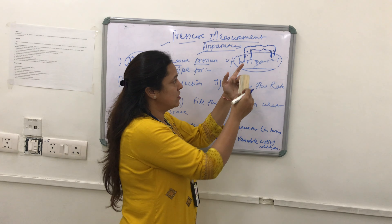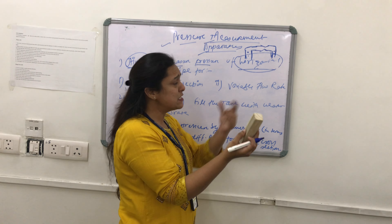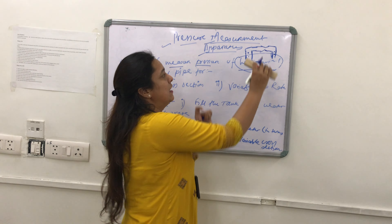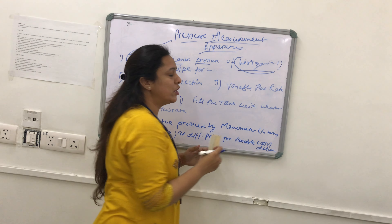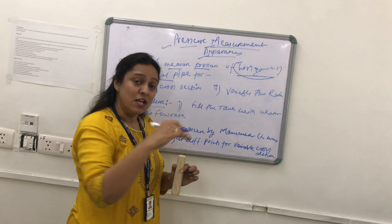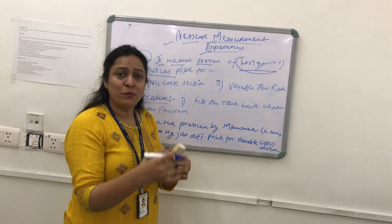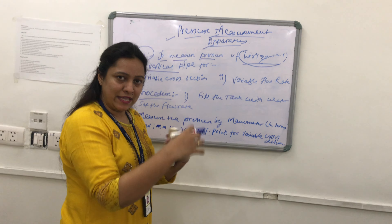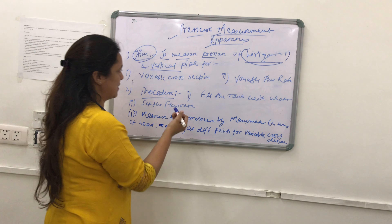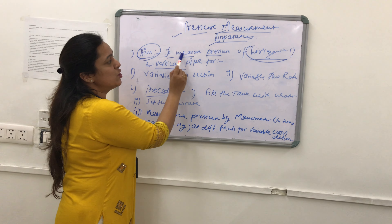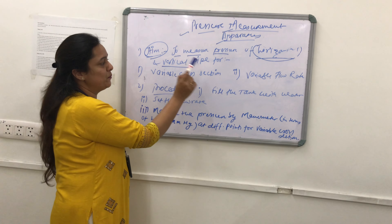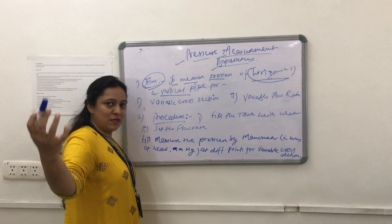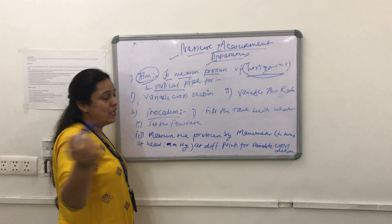This is not exactly the same as what you will see in the apparatus, but what I am trying to say is that you need to measure the pressure at different points for the different cross sections. We are getting variable cross section on the horizontal tube — at some points the diameter is decreasing and at some points it is increasing. The aim is to measure the pressure of horizontal and vertical pipe.